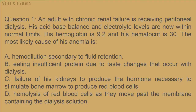Question 1: An adult with chronic renal failure is receiving peritoneal dialysis. His acid-base balance and electrolyte levels are now within normal limits. His hemoglobin is 9.2 and his hematocrit is 30. The most likely cause of his anemia is: A) hemodilution secondary to fluid retention; B) eating insufficient protein due to taste changes that occur with dialysis; C) failure of his kidneys to produce the hormone necessary to stimulate bone marrow to produce red blood cells; D) hemolysis of red blood cells as they move past the membrane containing the dialysis solution.